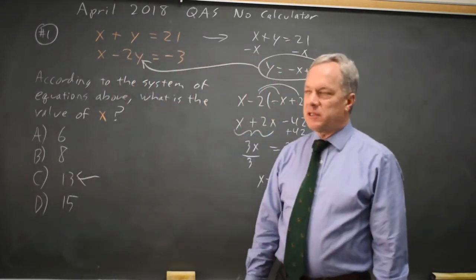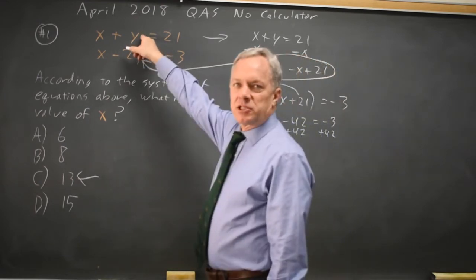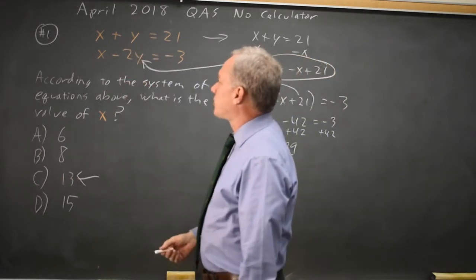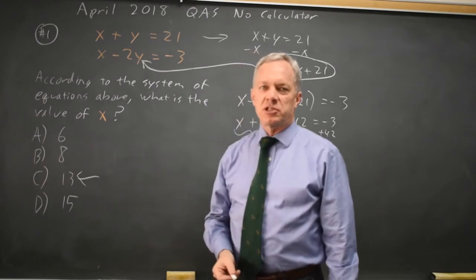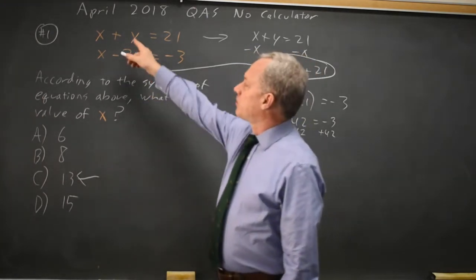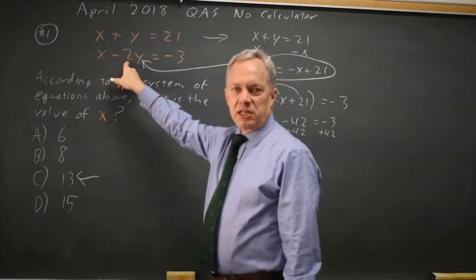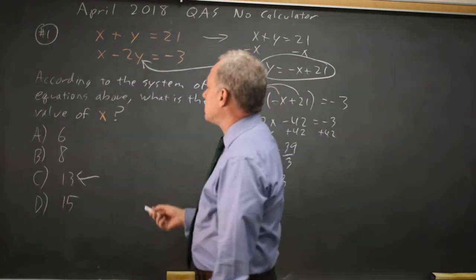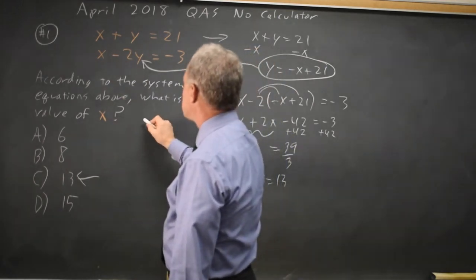Alternatively, I can take a linear combination of these two equations. If I multiply the first equation through by 2, I'll have 2y, and that'll cancel the negative 2y, leaving me with just x. It turns out to be the same arithmetic, just a different way of looking at it.